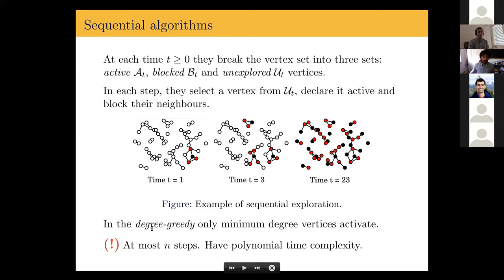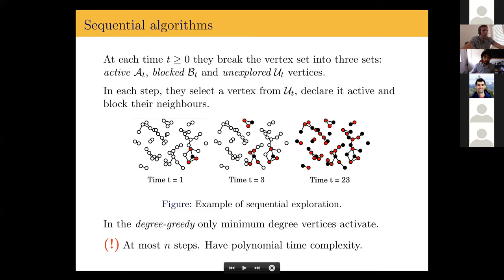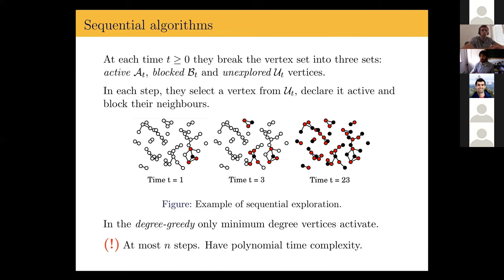I will focus on one special instance called the degree greedy algorithm, which at each step selects a vertex with minimal degree in the unexplored subgraph, choosing uniformly among those of minimum degree. Sequential algorithms take at most N steps to run and most are polynomial in complexity. However, in general they are not optimal in the sense that they obtain independent sets that are probably far from maximum.